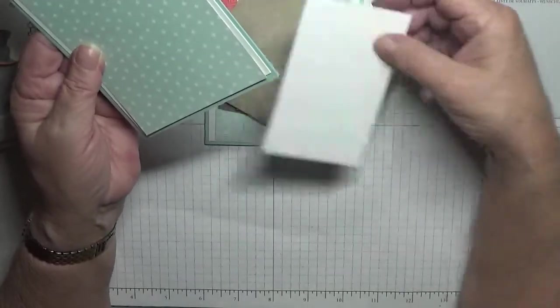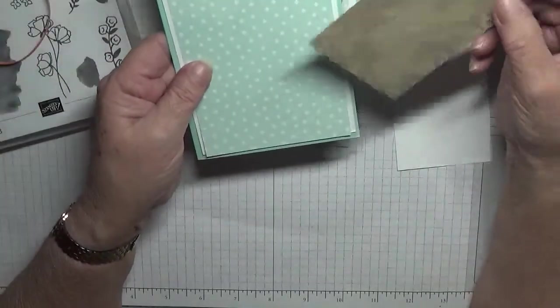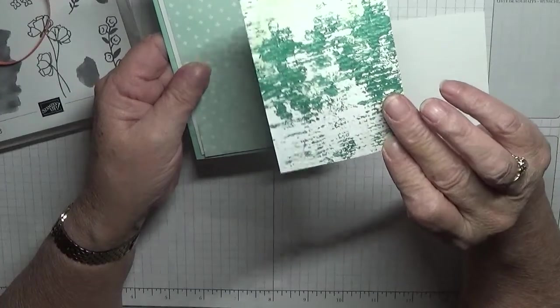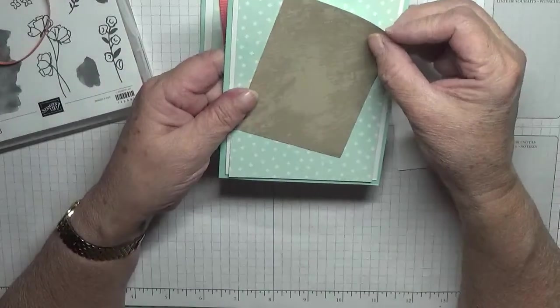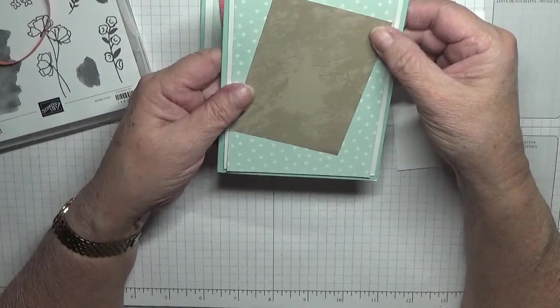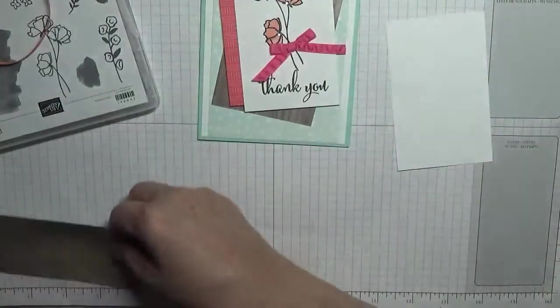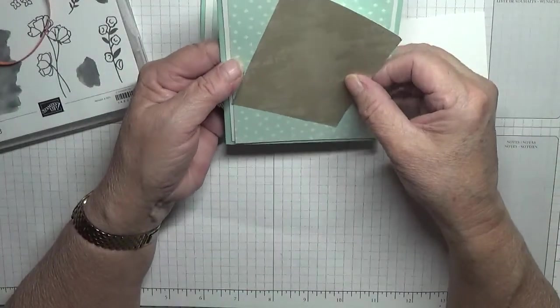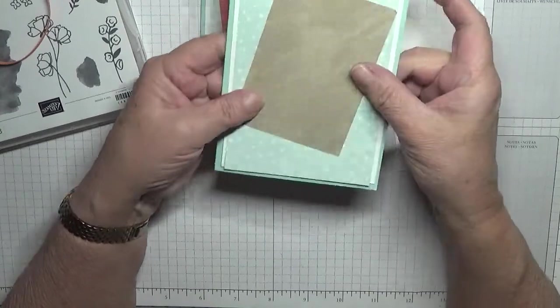And then I've got a piece of crumb cake. And that measures 4 inches by 2 and a quarter. And that will sit on like that there.